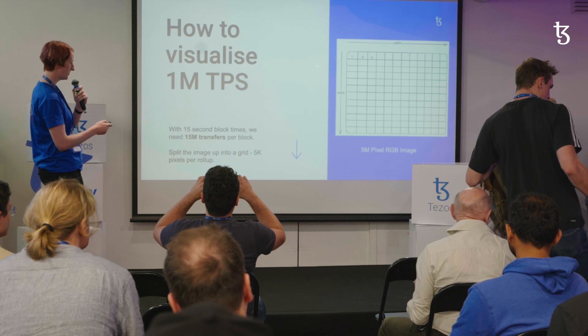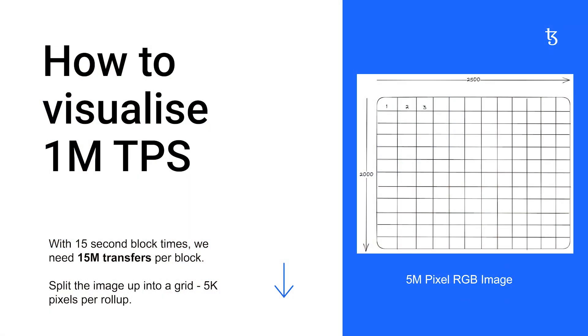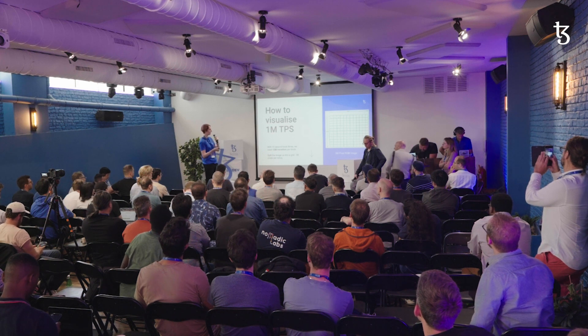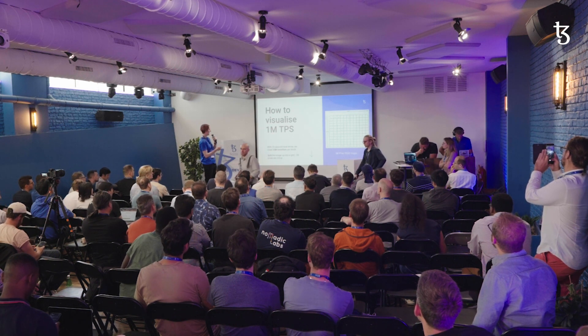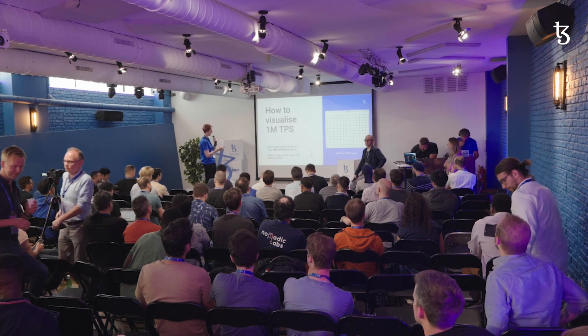Every time a transaction happens, we write it out to the debug log of the rollup, which is then picked up by the visualization. Zooming out, all these rollups together form a grid. For a million TPS on Mondaynet with 15-second block time, there are 15 million transfers per block. Each rollup gets 5,000 pixels or accounts, processing 15,000 transfers per block — a red, green, and blue transfer for every pixel.